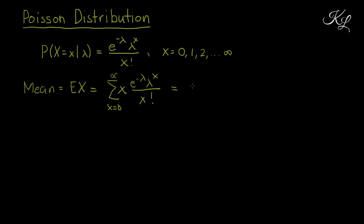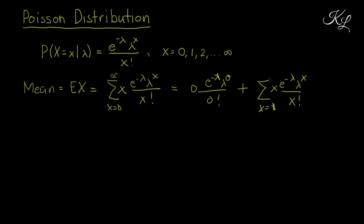To make it clear, the x = 0 term contributes 0 · e^(−λ) · λ^0 / 0!, so we're left with the summation of x · e^(−λ) · λ^x / x! from x = 1 to infinity. We want to simplify this using the Taylor series: e^y = Σ y^i / i! from i = 0 to infinity.